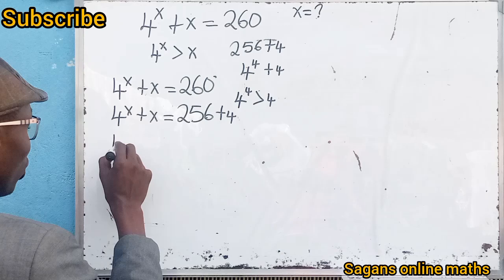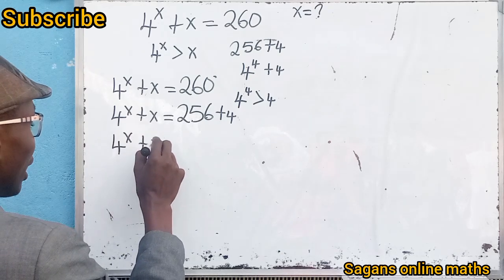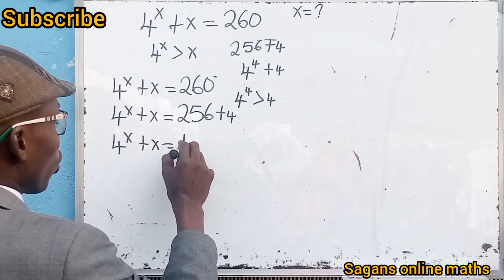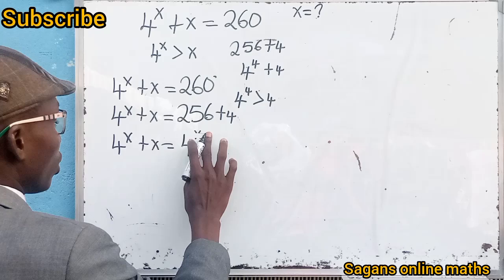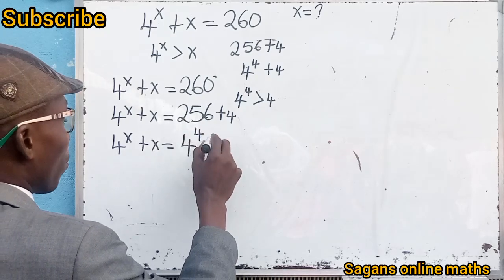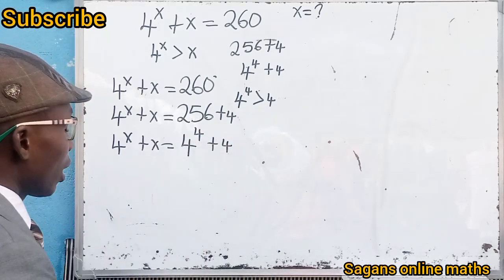Let's put this in this form: 4 raised to the power of x plus x equals 4 raised to the power of 4 plus 4. Now that's why I say without using the Lambert W function, this problem is already being solved.